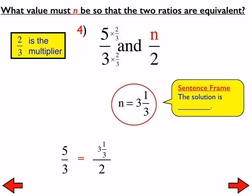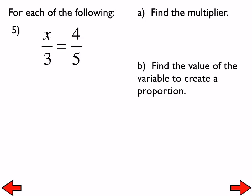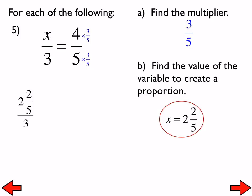So far every single one of these has had the variable on the right-hand side, but it does not matter whether it's on the right or left. So now we attempt number 5, where the variable is on the other side. We're trying to turn 5 into 3 — what do we multiply 5 by to make 3? That's 3 fifths, so that's the multiplier. We multiply 4 by 3 fifths, giving 12 fifths, or 2 and 2 fifths. So now we have officially created a proportion: 2 and 2 fifths over 3 is equivalent to 4 fifths.